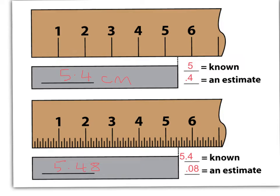So whenever you are measuring something in a chemistry lab, your last number is always going to be an estimate.